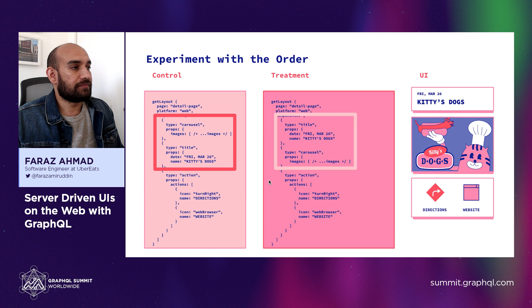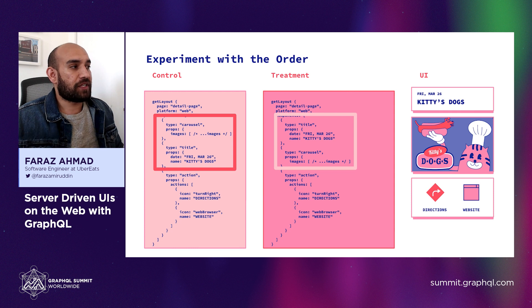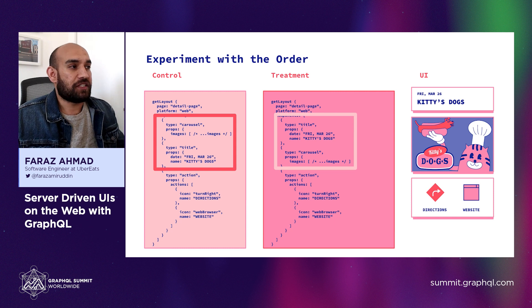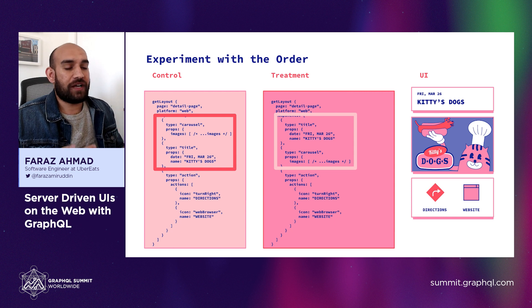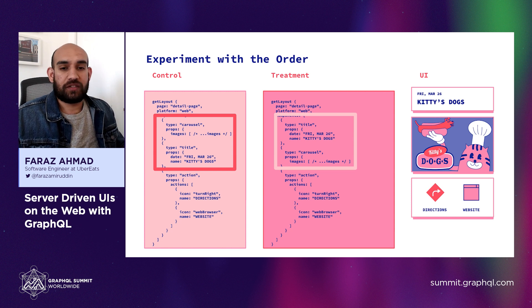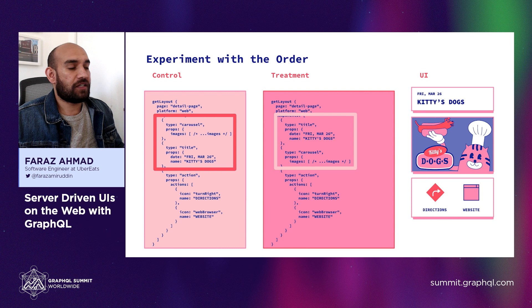Here's another example of experimenting with order. Maybe design wants to try putting the header at the top before the carousel. In our original design we had the carousel first, then the title, then the action. In the experiment group we have the title first and then the carousel. You don't have to do anything on the client or reorder components in your page — you make the same query and based on some server configuration, it replies with the new order. On the far right we got the title, the carousel, and then the actions.